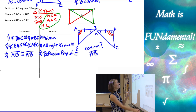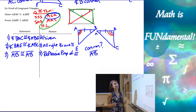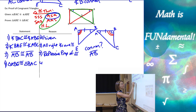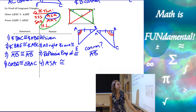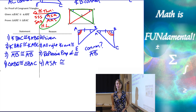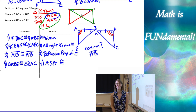We have enough to use angle side angle. So triangle ABE is congruent to triangle BAC by the angle side angle congruence theorem. And that concludes our lesson on overlapping triangle congruence. Thank you so much for watching, and remember — math is fundamental.